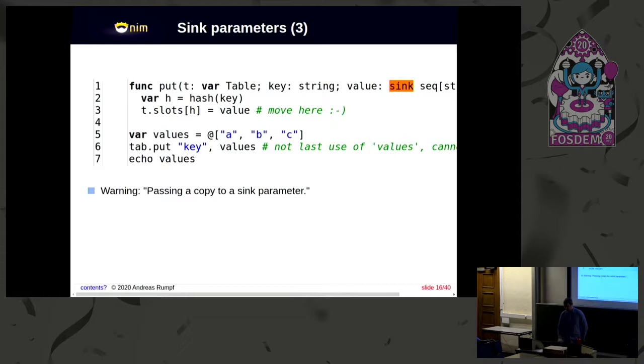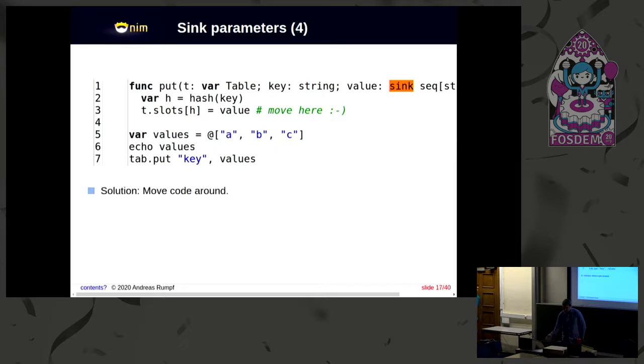One solution here would be you move it around. Like, if you echo the values before you embed it into this hash table, then it would work because the compiler knows echo doesn't want to take over ownership of values. But table put does because of this sink annotation. So that's one solution. Of course, if you are just adding some code for debugging purposes, you don't care if it causes more copies or not because this code will be removed soon again afterwards.